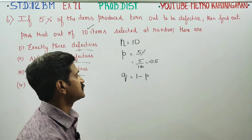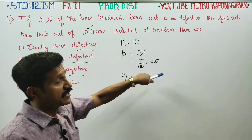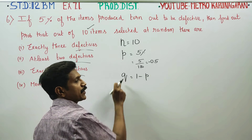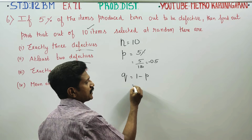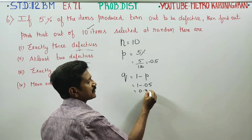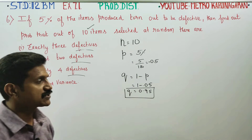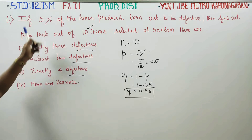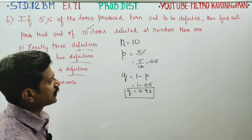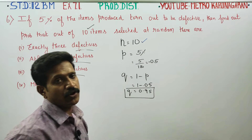Q represents the good items. Since 5% is defective, 95% are good items. Q is calculated as 1 minus p, that is 1 minus 0.05, giving Q equal to 0.95. With n, p, and q established, we will use the binomial distribution.